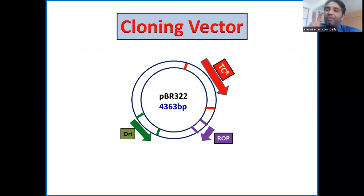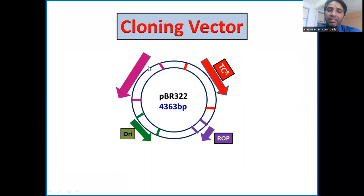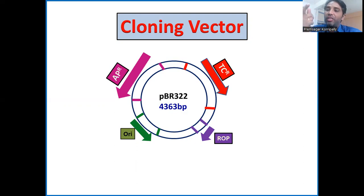pBR322 has two genetic selection markers. The first is the tetracycline resistance gene and the second is the ampicillin resistance gene. The tetracycline resistance marker encodes a transport protein — an efflux transporter — that pumps influxed tetracycline out of E. coli, so the bacterium carrying the plasmid can survive in the presence of tetracycline.